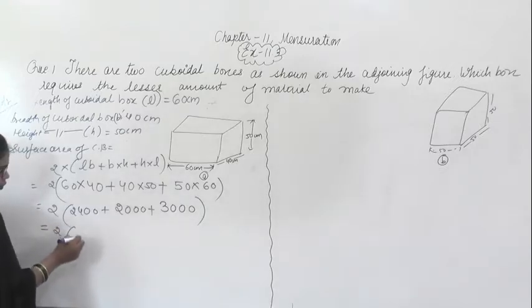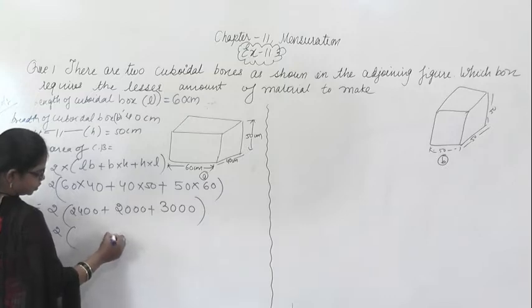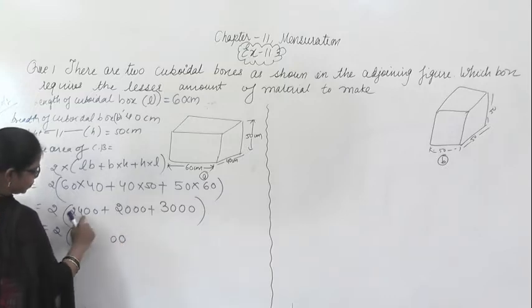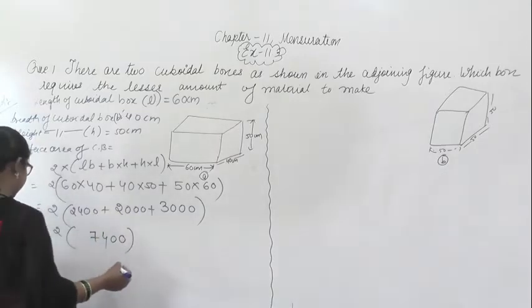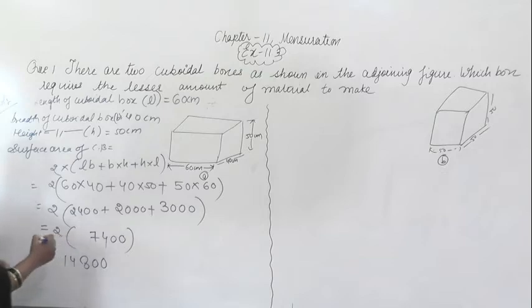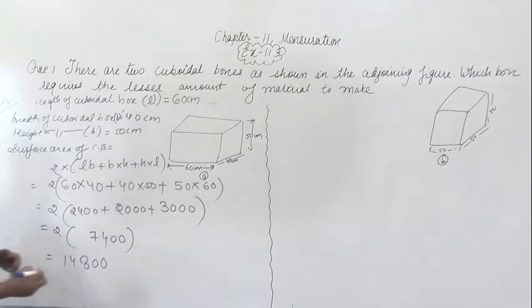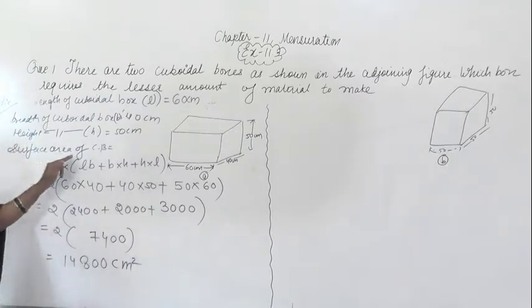From here you will get 2 into 7400, which equals 14800 centimeter square. You will get the surface area of this cuboidal box as 14800 cm².